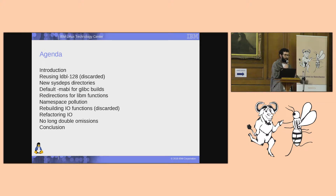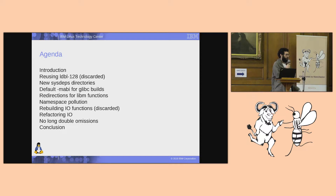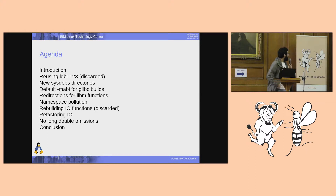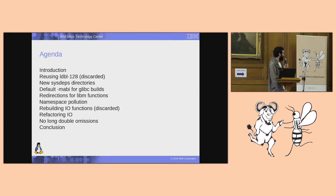Then I will move to the first attempt that I did at addressing this problem and what were the reasons why this was discarded. And then I'll present the other attempt that I did, which is what's being developed right now. Also the MABI switch — how does this relate to the Glibc work, so this is a switch from GCC and how does this relate to all of this. And I'll explain how this affects the math library and the transition for I/O functions.